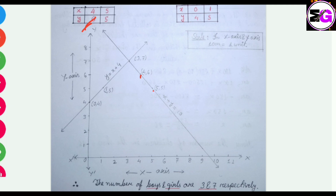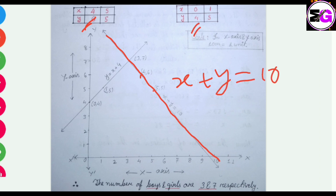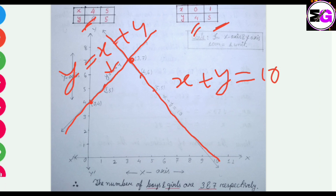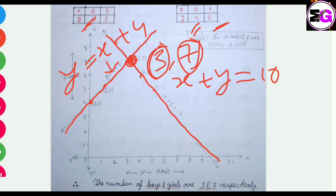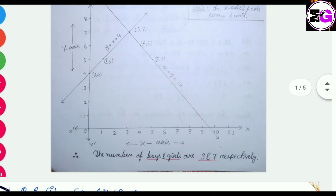Let's plot on the graph. The first points are (4, 6) and (5, 5). Connecting them forms the line x plus y equals 10. The next points are (0, 4) on the y-axis and (1, 5). Connecting them gives the line y equals x plus 4. The intersecting point is our required solution. After measuring, this point is (3, 7), which means x equals 3 and y equals 7. So the number of boys is 3 and the number of girls is 7.